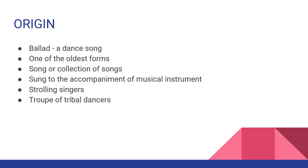The ballad is one of the oldest forms in English, older than Chaucer, and is one of the few that are of native growth. The word ballad means a dance song. Originally, it was a song or collection of songs sung from village to village to the accompaniment of a harp or a fiddle by a strolling singer or band of singers who earned a living in this way. In its earliest stages, the singers were accompanied by a troupe of tribal dancers.